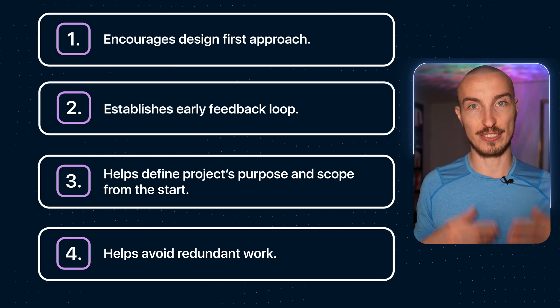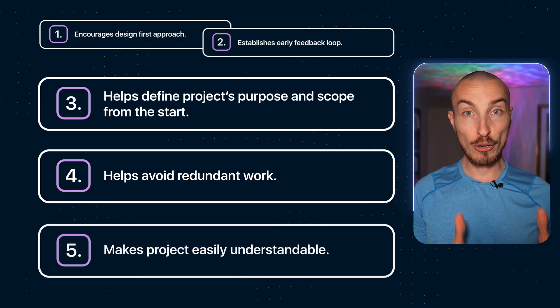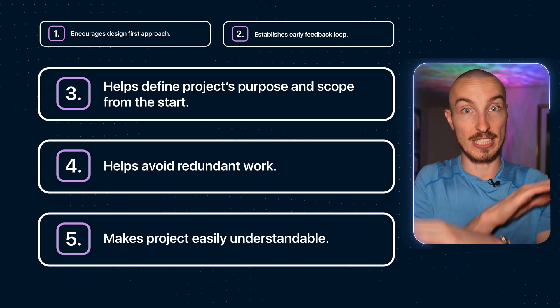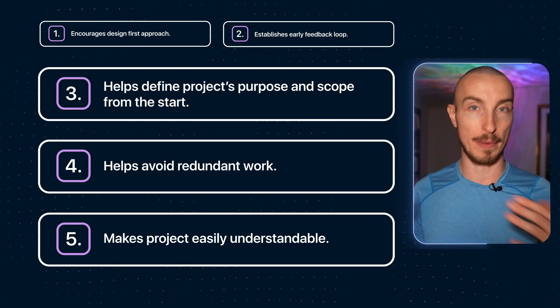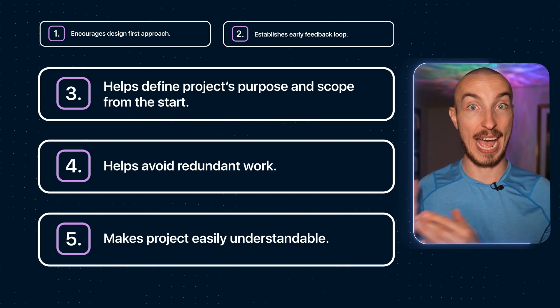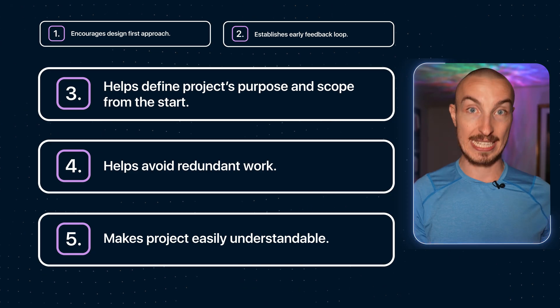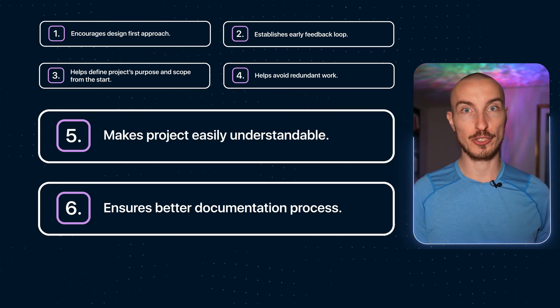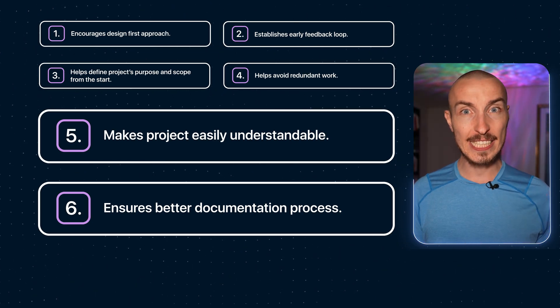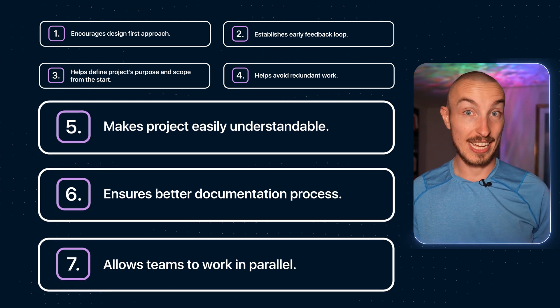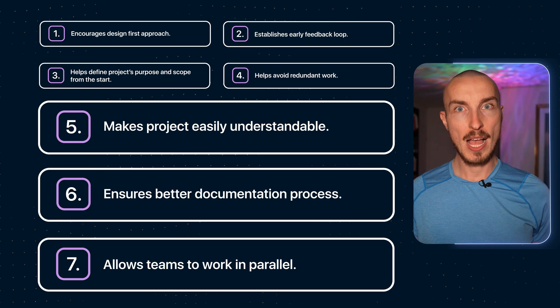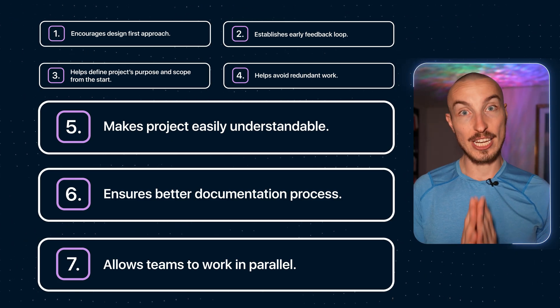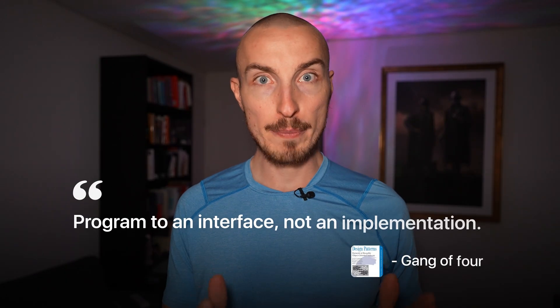By solidifying your API upfront you can avoid the redundant work of rewriting your code later when changes are more complex and costly. If you think about all your edge cases first you can avoid unnecessary reworks. By focusing on your README first you ensure that documentation is not an afterthought but rather a core part of your development process. This leads to better and more comprehensive documentation which benefits both the maintainers and the users. A well documented code base with a clear README makes it easier for new team members to understand the project quickly, significantly reducing their onboarding time. And finally, when you write documentation first teams can work in parallel because everyone knows what to expect from each other. In other words, README driven development closely aligns with one of the most important principles in software design made famous by the Gang of Four: program to an interface, not to an implementation.